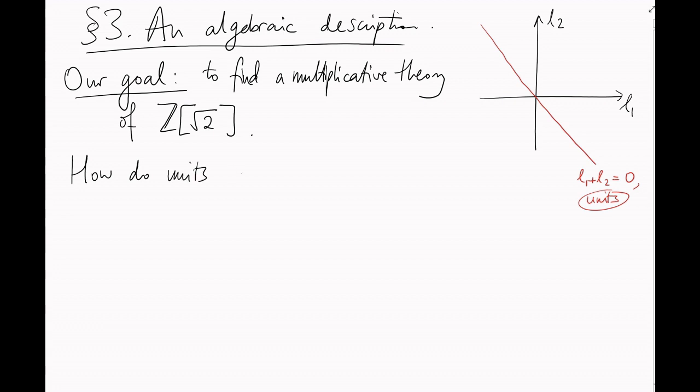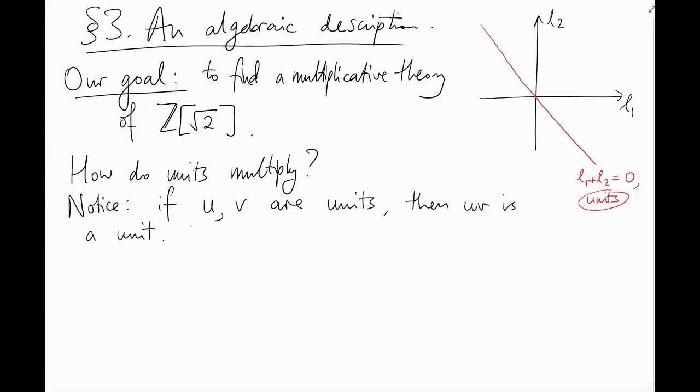Here's the first thing to notice regarding units and multiplication. If u and v are two units, then their product uv is a unit too. For example, you could calculate mod the norm of uv, which is just mod the norm of u times mod the norm of v, which is 1.